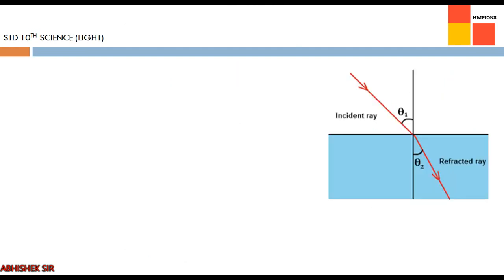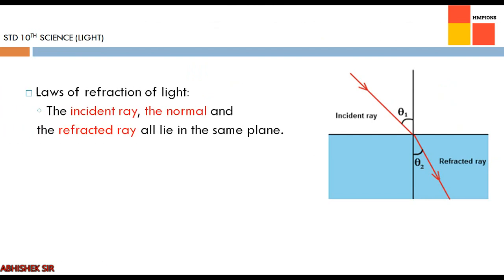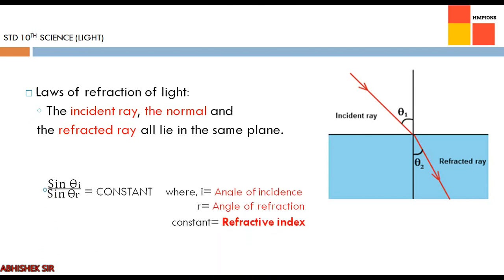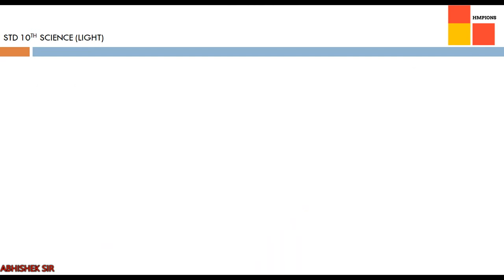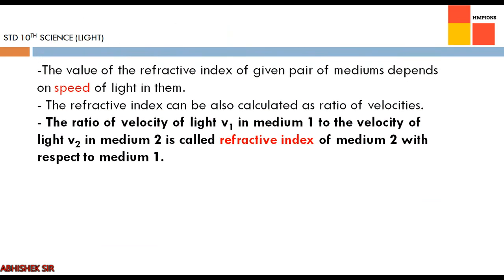Experiments show that the refraction of light occurs according to certain laws called the laws of refraction. The first law states that the incident ray, normal, and refracted ray all lie in the same plane. The second law is a very important statement also known as Snell's law: the ratio of sine of angle of incidence to the sine of angle of refraction is constant, and this constant is called refractive index.